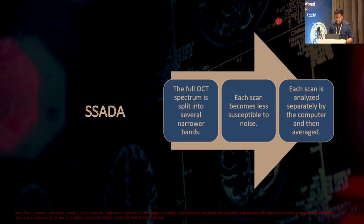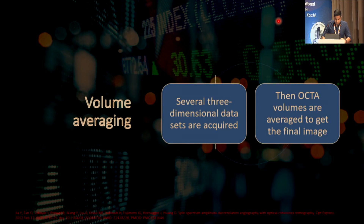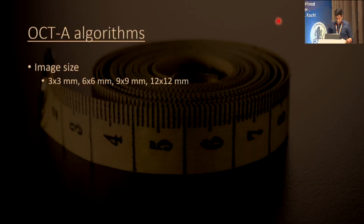SSADA basics: the full OCT spectrum is split into several narrow bands — each scan becomes less susceptible to noise. Each scan is analyzed separately by the computer and then averaged, giving a clear picture without overlapping vessels or overlapping void areas, allowing calculation of void area and volume. In volume averaging, several three-dimensional datasets are required and OCT volumes are averaged to get a final image.